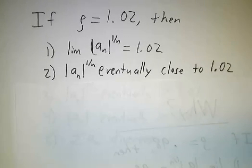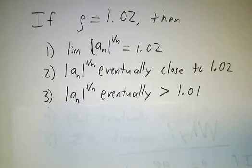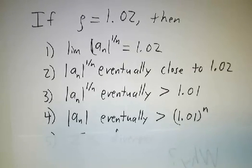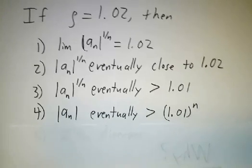Well, that means it's eventually close to 1.02, which means it's eventually bigger than 1.01, which means that an is eventually bigger than 1.01 to the n.